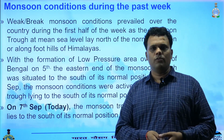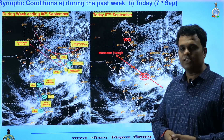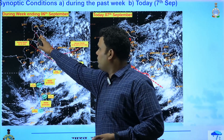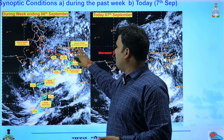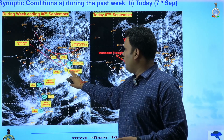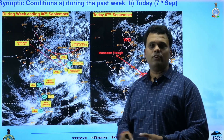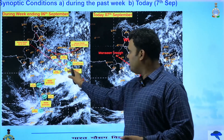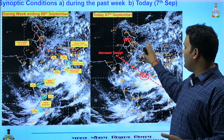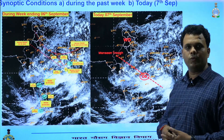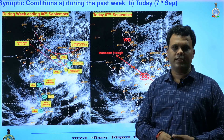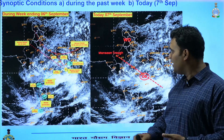Today, on 7th September, the monsoon trough is active and lying to the south of its normal position. Looking at other weather features impacting India during the past week: the trough was near the foothills of the Himalayas until 4th September, and from the 5th, because of the formation of a low pressure area, its eastern end moved towards the southern position. On the 6th the monsoon trough shifted further south, and today on the 7th it remains south of its normal position — meaning the monsoon is in active condition.